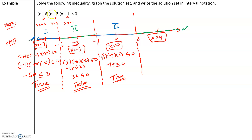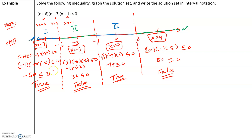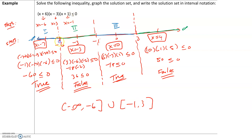What about interval 4 with x equals 4? We have (4 + 6)(4 − 3)(4 + 1). That's 10 times 1 times 5, which is 50. Is 50 less than or equal to 0? No — so this is a false statement. Our solution set contains the intervals with a true statement: negative infinity to negative 6, union negative 1 to positive 3. These have brackets because we have a less than or equal to sign, so these endpoints are included.